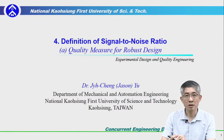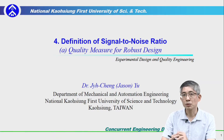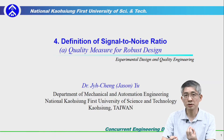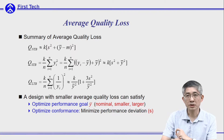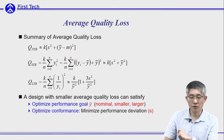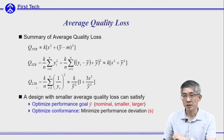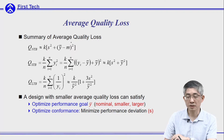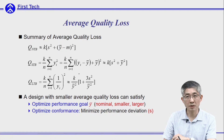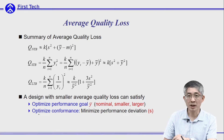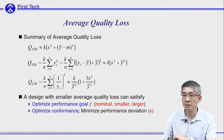We understand that the average quality loss can be a good index to determine design quality. Now we would like to have actual numbers to be the objective in future design. This is the summary of the average quality loss for three different types of problems: nominal-the-best, smaller-the-better, and larger-the-better. By using these criteria, we can optimize our performance goal depending on different types of design problems, and at the same time optimize conformance by minimizing performance deviation.